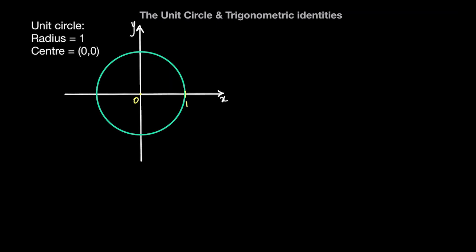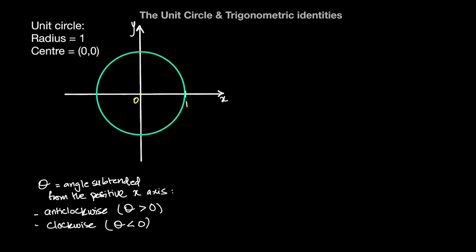Now let's say that the angle theta can be defined as the angle subtended from the positive x-axis. So let's say that I take the radius from the positive x-axis, which is to the right side of the origin, and I subtend this radius by an angle of theta.